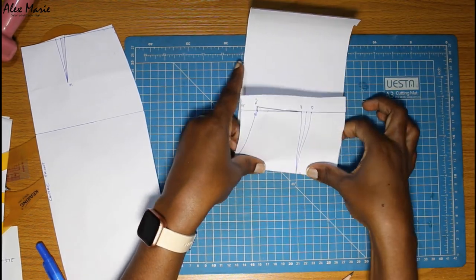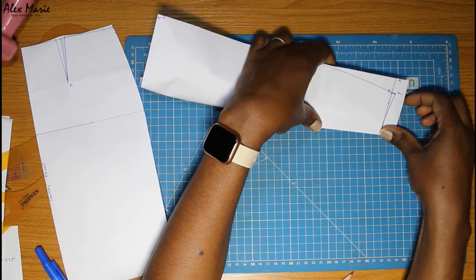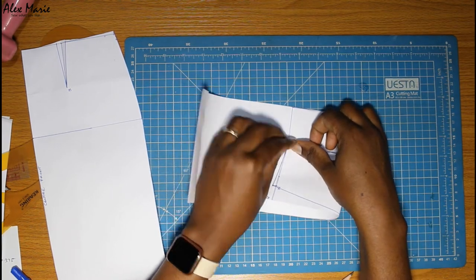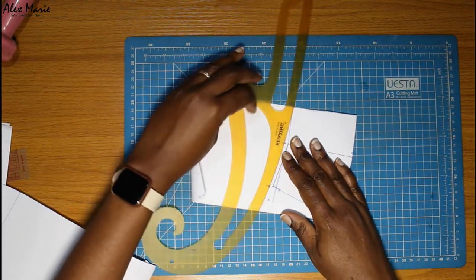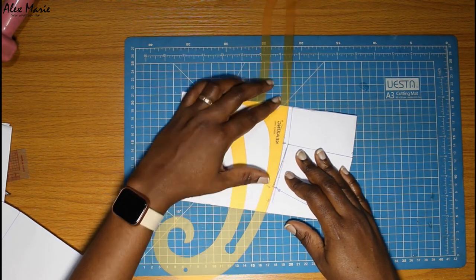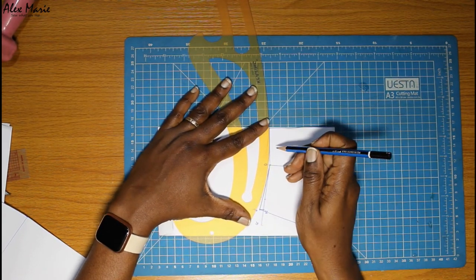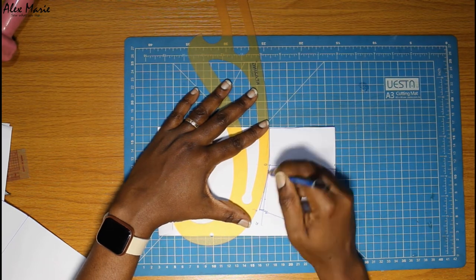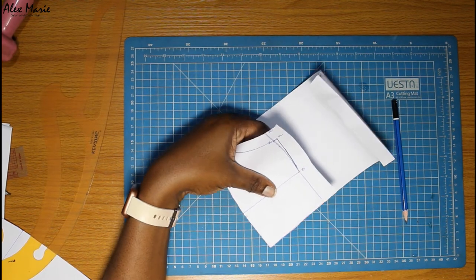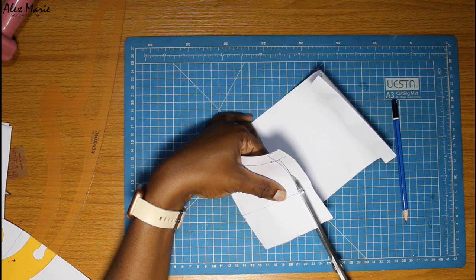And that has trued the waistline. We'll do the same for the back. Crease at the point, crease on the side dart leg, fold and close the dart, and smooth your curve.